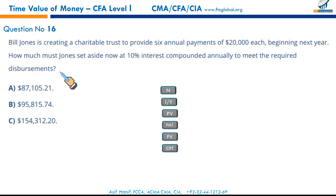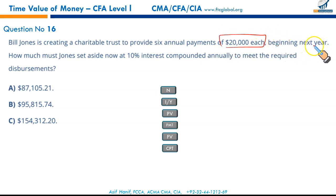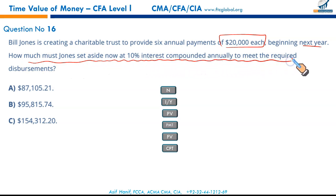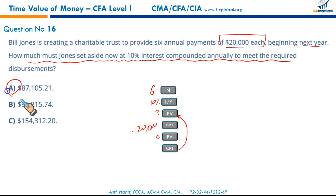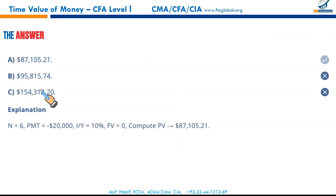Bill Johns is creating a charitable trust to provide six annual payments of $20,000 each beginning next year — ordinary annuity. How much must Johns set aside now at 10% interest compounded annually? N = 6, I/Y = 10%, PMT = -$20,000, FV = 0 — compute PV. You will get your result, and it is A.